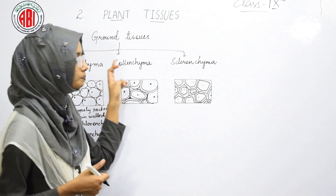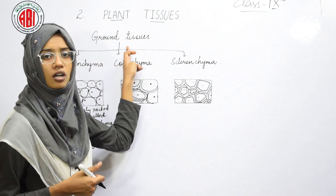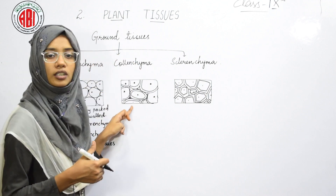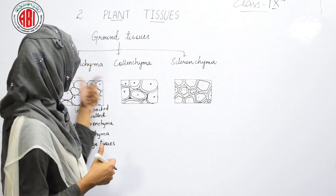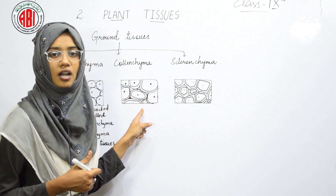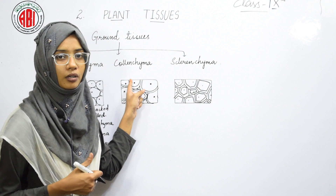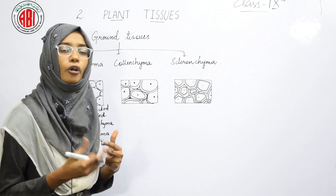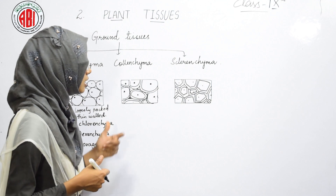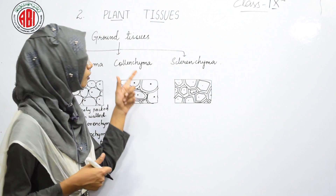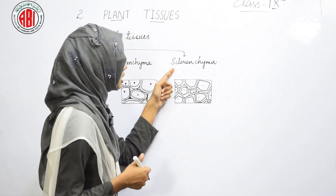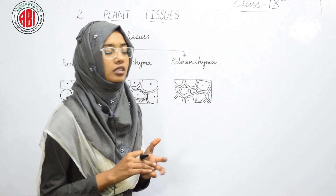The next ground tissue is colenchyma. Colenchyma is also a ground tissue, but the cells of colenchyma are thick-walled when compared to parenchyma, and the colenchymatous cells are more elongated when compared to the parenchymatous cells.